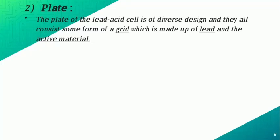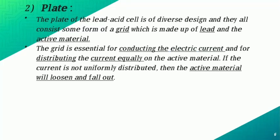The plate of a lead-acid battery is divided by a sort of grid, which is made up of lead and the active material. The grid is essentially electrically conducting, carrying the electric current and distributing it equally through the plates.